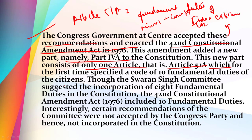Article 51A first specified a code of 10 fundamental duties for citizens. Though the Swaran Singh committee had suggested the incorporation of only 8 fundamental duties, the 42nd Constitutional Amendment Act 1976 ultimately included 10 fundamental duties.